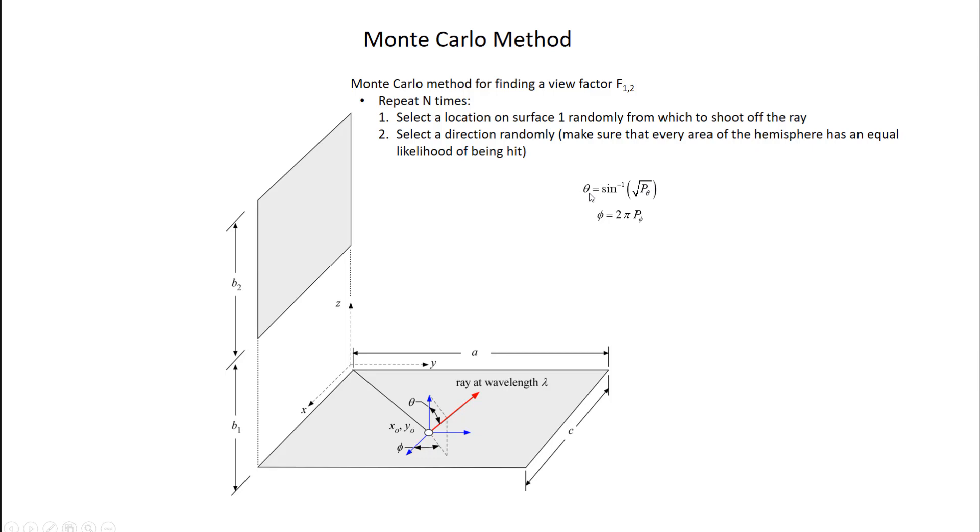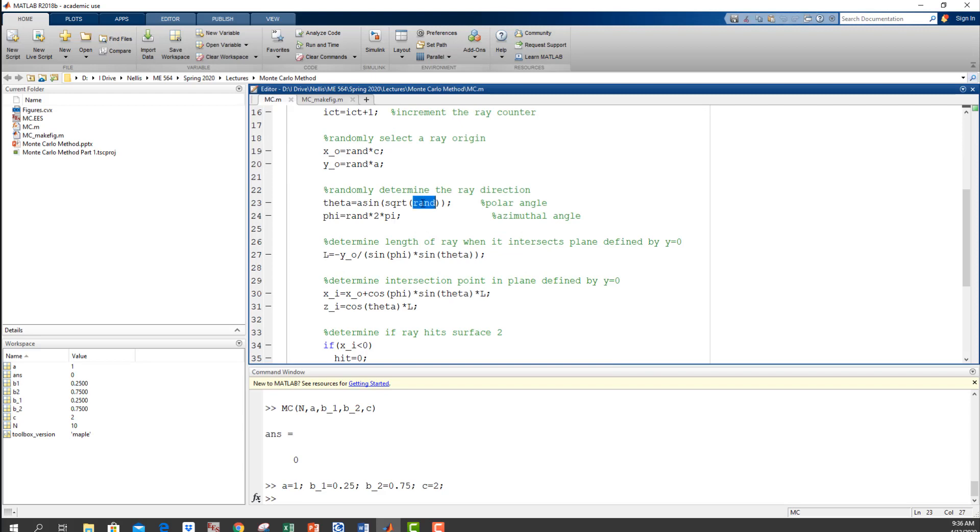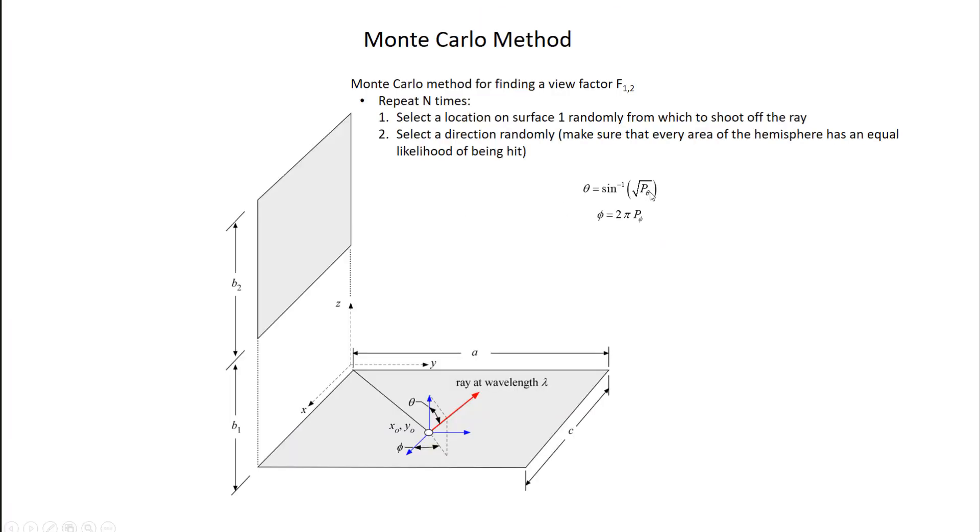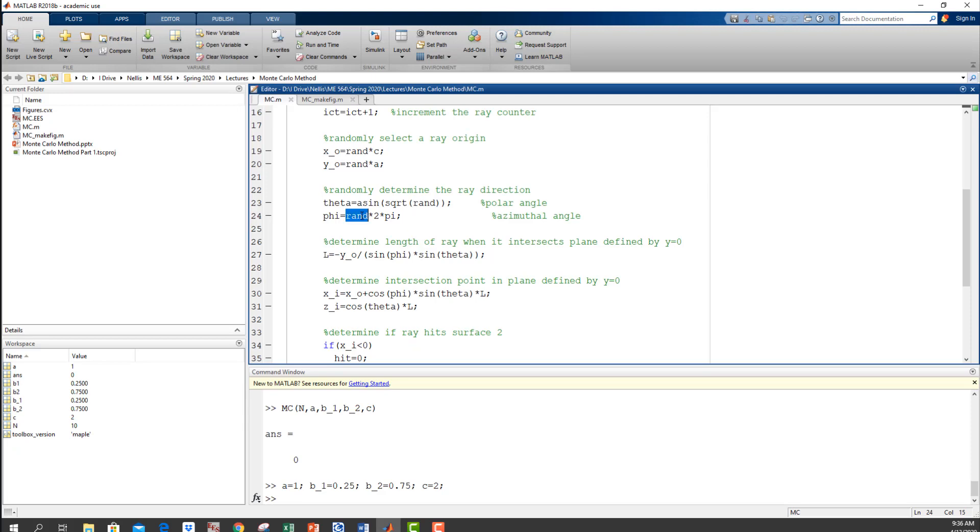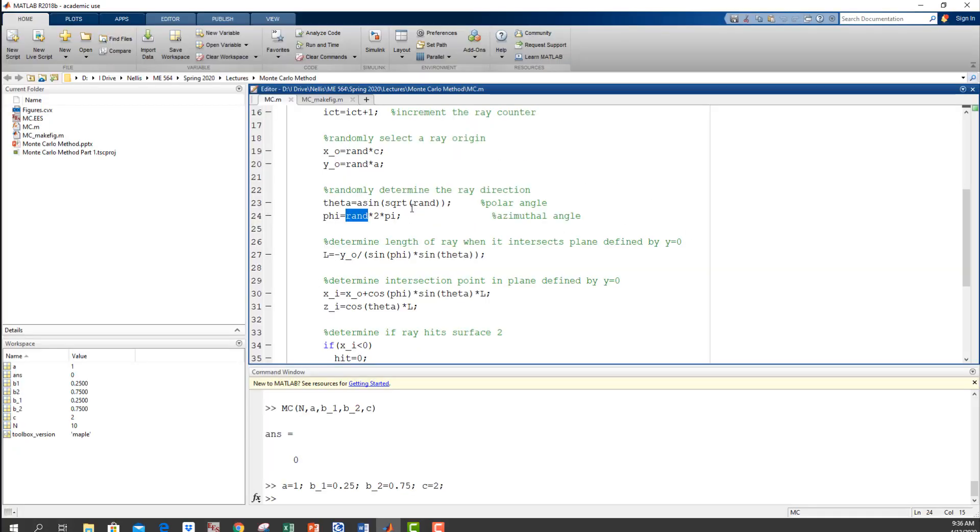And so if you go back to my MATLAB code, you should see that right here. This rand is what I'm using here for p theta, and this rand is what I'm using here for phi. Every time MATLAB encounters this rand function, it generates a new random number. So just to be clear, this rand and this rand and this rand and this rand, they're all different numbers. It's being generated.